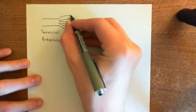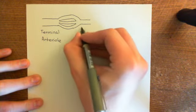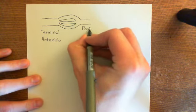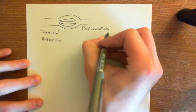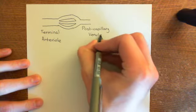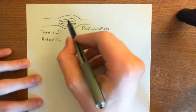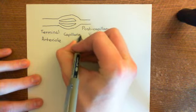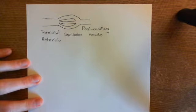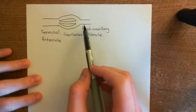After the terminal arterioles come the capillaries, which then reconverge into post-capillary venules. Terminal arterioles and post-capillary venules are absolutely tiny — not the massive arteries and veins from anatomy. All three types of blood vessel are found in the lamina propria and are referred to as the microvasculature.